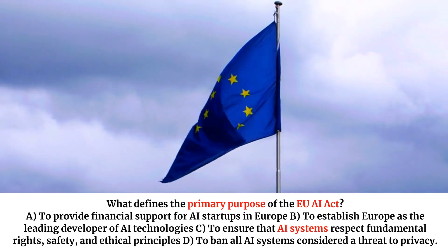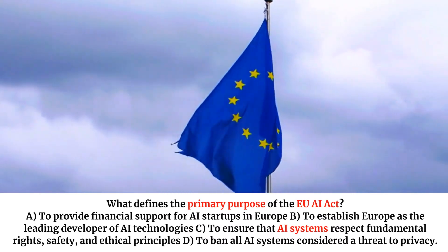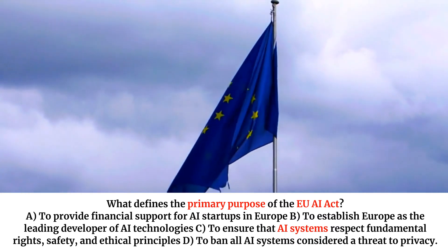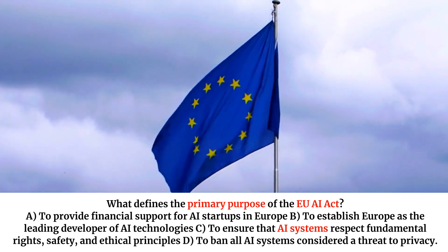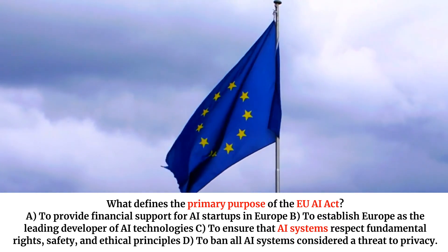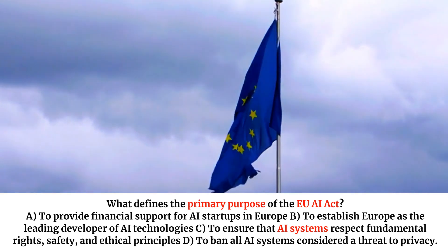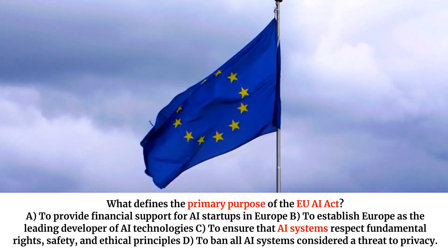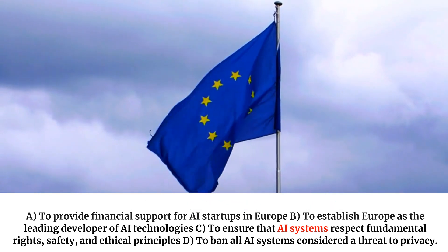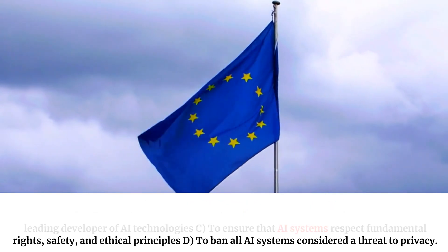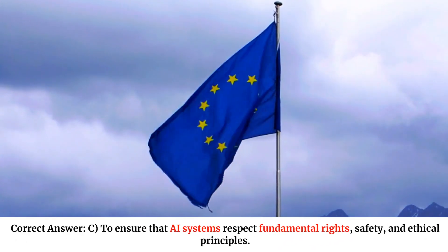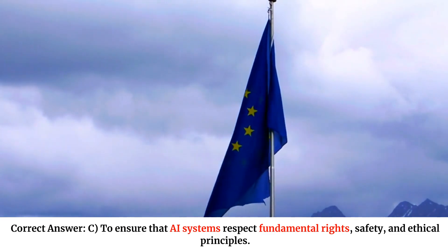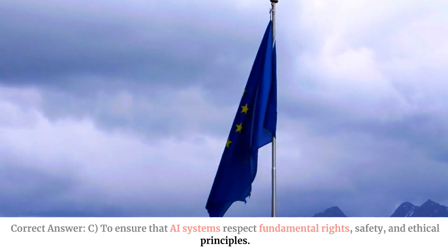What defines the primary purpose of the EU AI Act? A. To provide financial support for AI startups in Europe. B. To establish Europe as the leading developer of AI technologies. C. To ensure that AI systems respect fundamental rights, safety, and ethical principles. D. To ban all AI systems considered a threat to privacy. Correct answer: C. To ensure that AI systems respect fundamental rights, safety, and ethical principles.